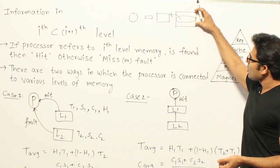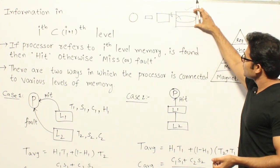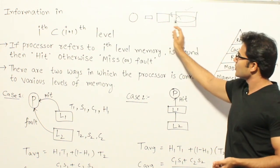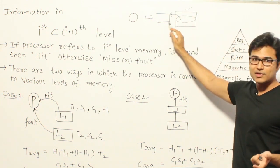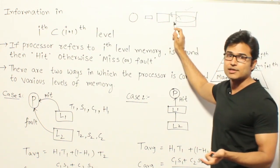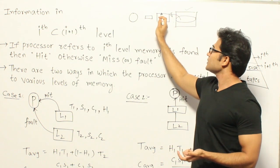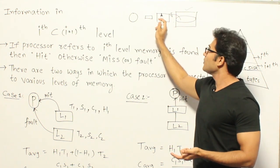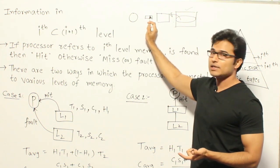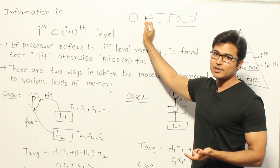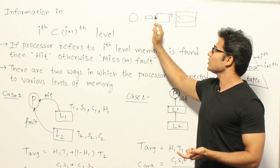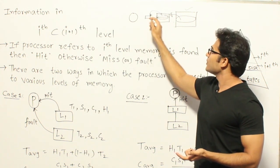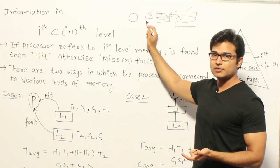The reason is, you cannot obviously place everything that is present in secondary memory in the main memory because the size is obviously different. Similarly, whatever is present in the main memory may not be completely present in the cache. Only a part of it will be present depending on what is the size of the cache.